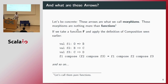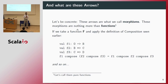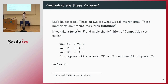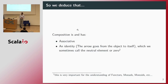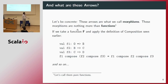Now, what are these arrows concretely? These arrows are what we call morphisms. Let's reduce the definition and say that a morphism is a function. We all know what a function is. So if I take a function F and apply the definition of composition, I have three functions F1, F2, and F3 — the first going from O to B, then from B to C, and then from C to D. I can compose my three functions the way I want.